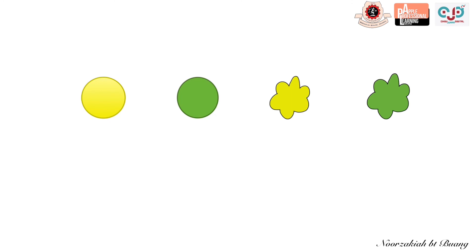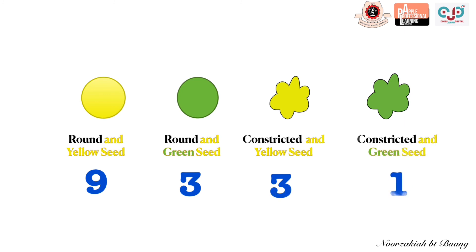The offspring genotypes in the boxes correspond to a 9:3:3:1 ratio of phenotypes. There are four possible phenotypes: 9 round yellow, 3 round green, 3 constricted yellow, and 1 constricted green. Therefore, Mendel concludes that during the formation of gametes, alleles segregate and assort independently of another pair of alleles — in other words, they do not stick together but can combine independently. This is Mendel's Second Law, or the Law of Independent Assortment.